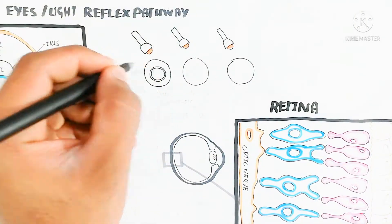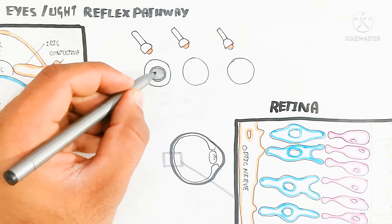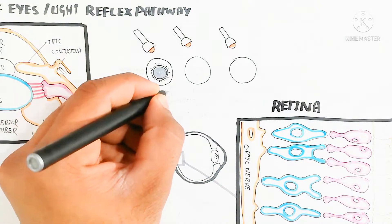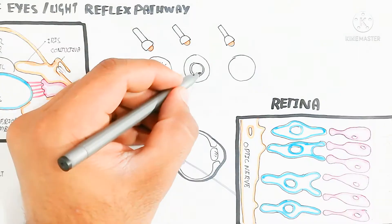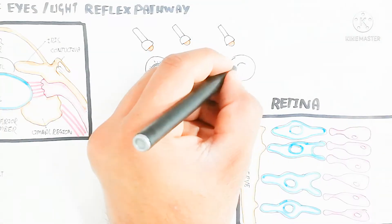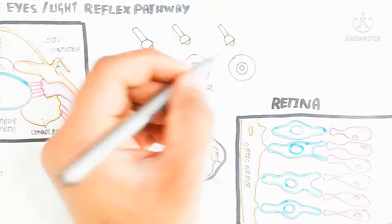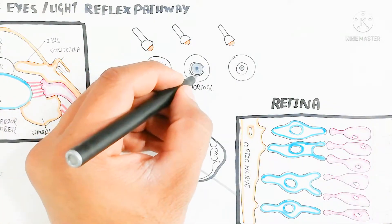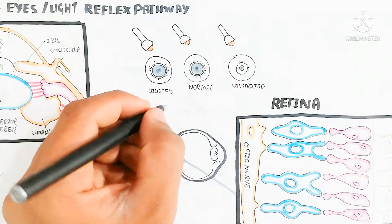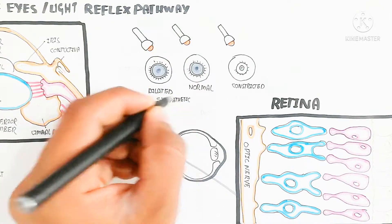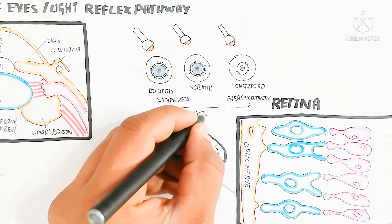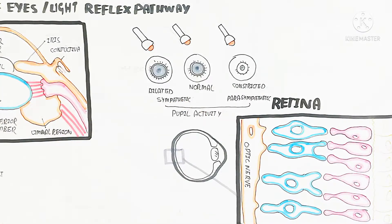I have a video about phototransduction — I will give the link in the description below. Here is the dilated pupil due to the sympathetic nervous system, the normal pupil, and the constricted pupil. The constricted pupil is used for close vision while the dilated pupil allows more light absorption for distant vision during sympathetic activation for alertness. The constricted pupil is due to the parasympathetic nervous system.